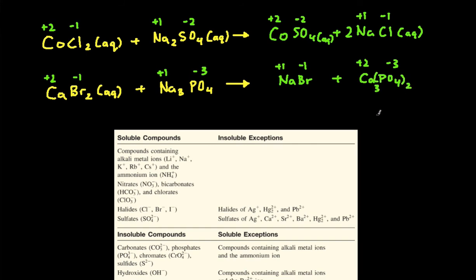Then to predict the states, again, we look at the solubility rules. Na is alkali metal. And any compound of alkali metal is going to be aqueous. It's going to be soluble.